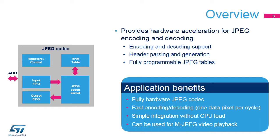As the JPEG Codec is fully implemented in hardware, it delivers one data pixel per cycle without any CPU load. Thanks to this flexible feature and its high level of performance, the JPEG Codec can be used for MJPEG video playback.